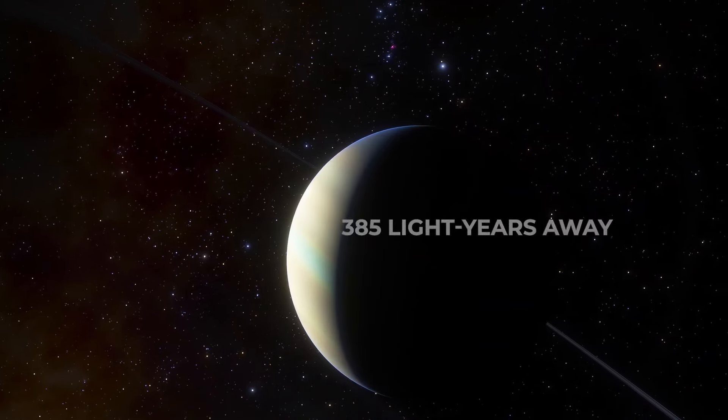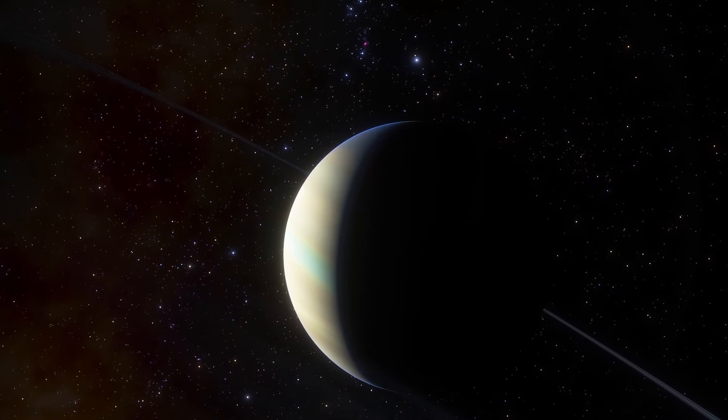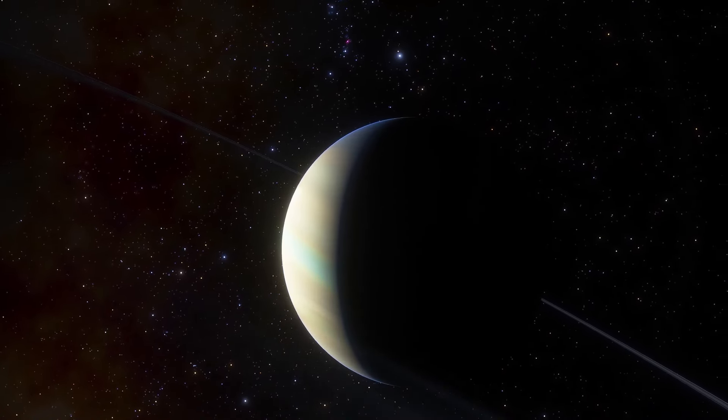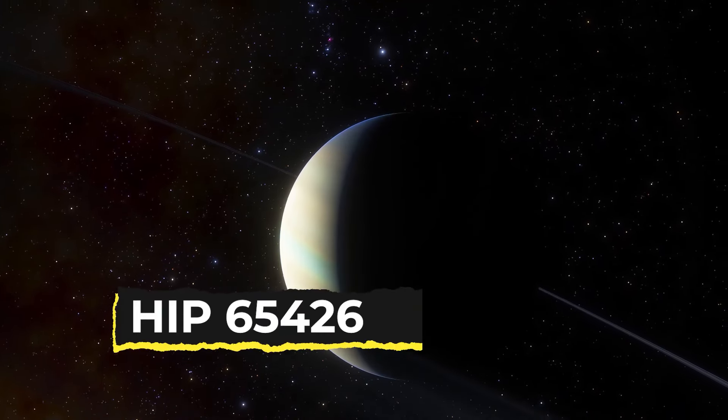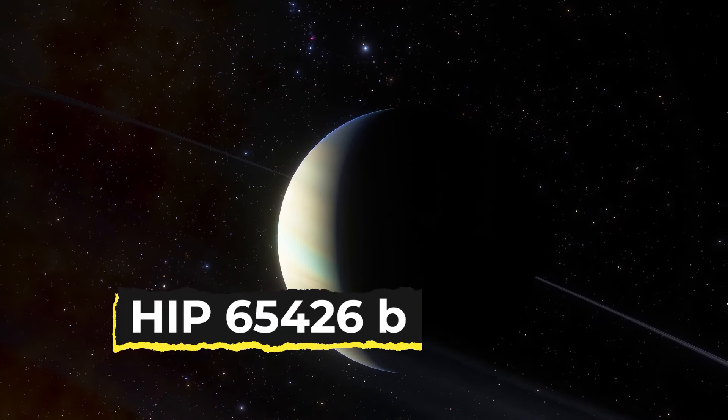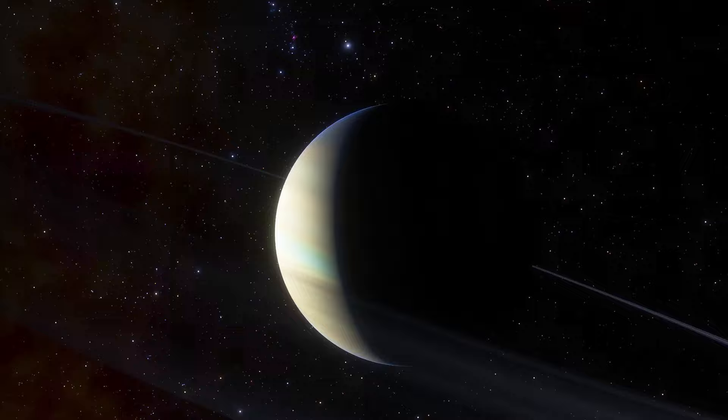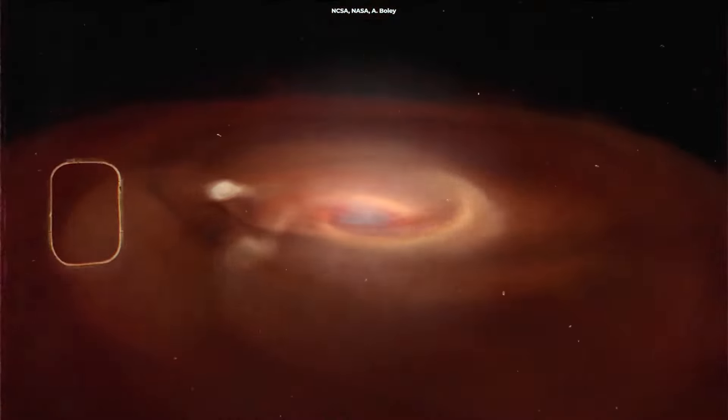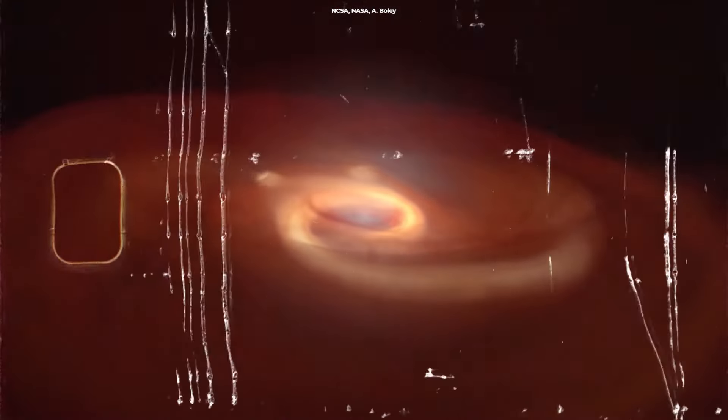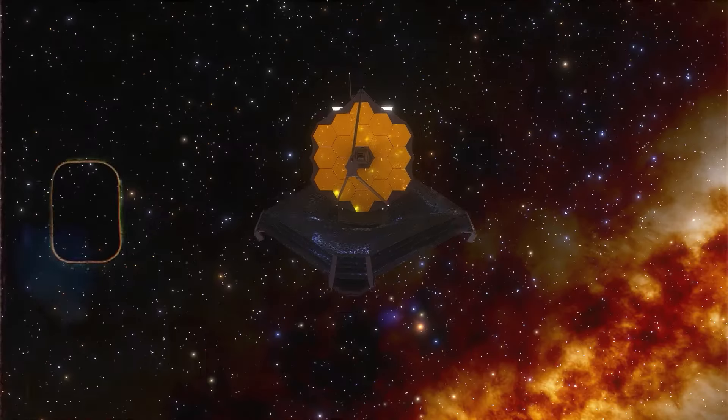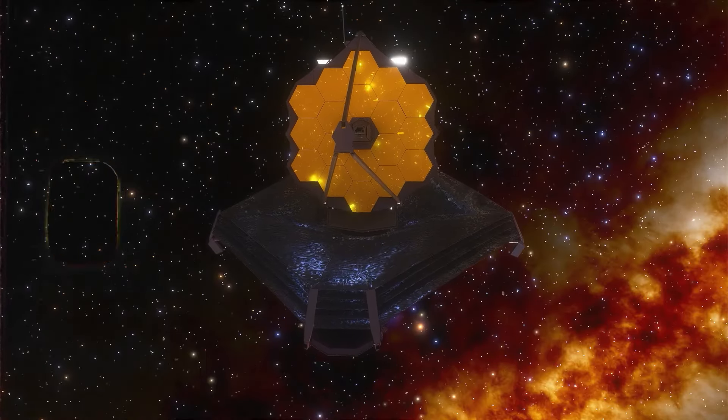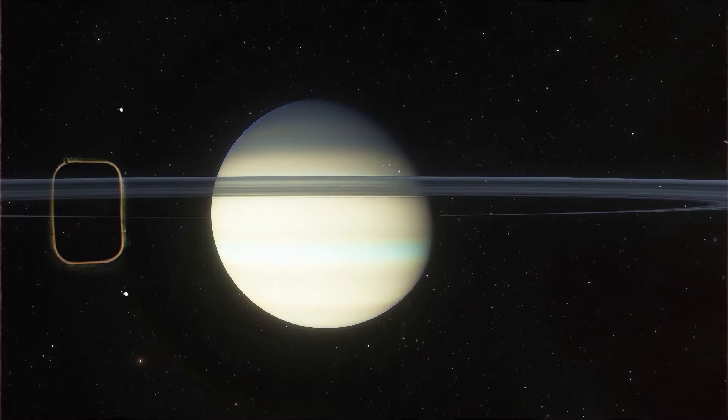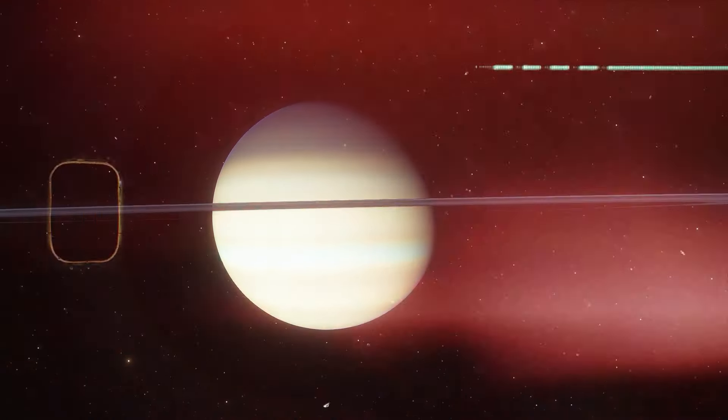At 100 times the distance from our Sun to Earth, HIP 65426b is much farther away from its host star than any planet in our solar system. This colossal gas giant is also exceptionally large, about 12 times the size of Jupiter. But thanks to Webb's advanced technology, we can now observe this distant exoplanet in stunning detail.